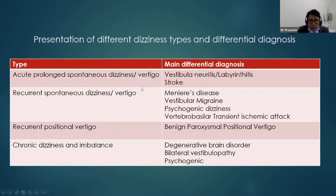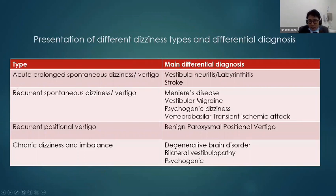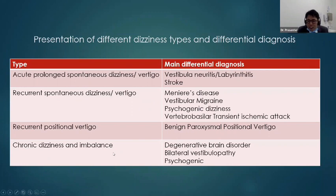Regarding gait and pattern of vertigo: acute prolonged spontaneous vertigo could be vestibular or stroke. Recurrent vertigo is unlikely a major pathology — recurrent positional vertigo is the most common culprit, which is benign paroxysmal positional vertigo. Chronic dizziness and imbalance is most likely either diabetic neuropathy, Parkinson's, or psychogenic. I never worry about chronic dizziness.